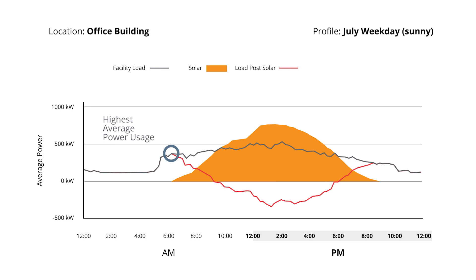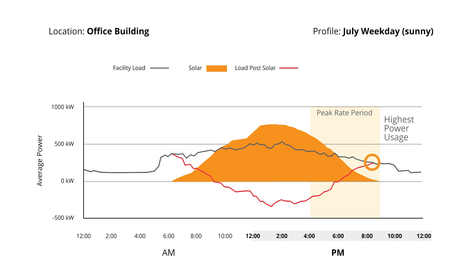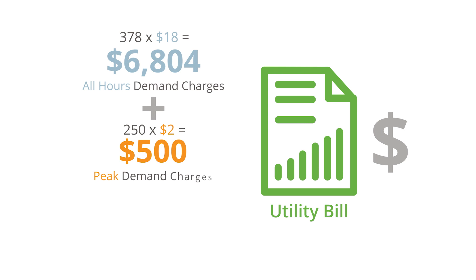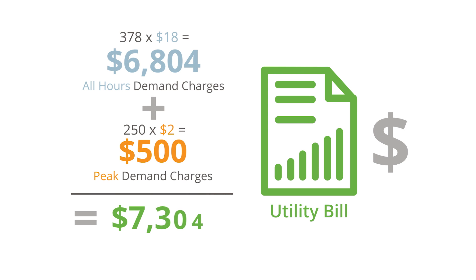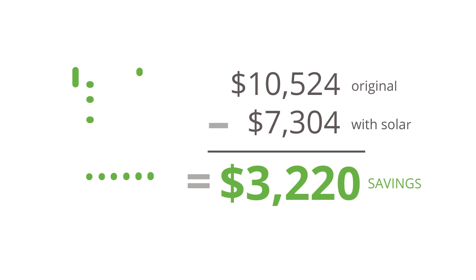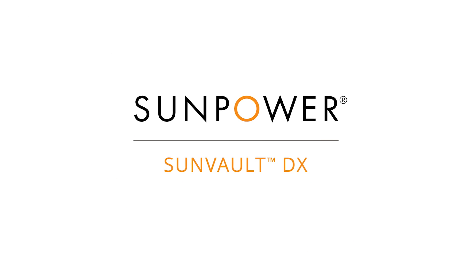The new highest power usage for all hours of the day now happens around 6:30 in the morning and is 378 kilowatts. The highest power usage during the peak time of use period occurs around 8:30 p.m. and is 250 kilowatts. When we do the math based on the previously stated demand charge rates, they now add up to a little over $7,300 this month, which represents about $3,200 in demand charge savings with solar installed. Which is great, but our Sunvault DX storage solution can save you even more.